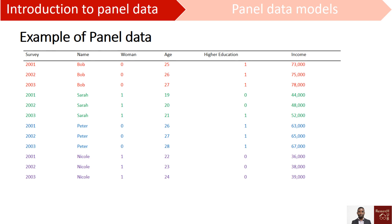Here is an example of a panel data structure. We study four people concerning their gender, age, education, and income, and we collect the data for each individual for three consecutive years. So we take Bob and collect all the information needed in 2001, then go to Sarah and collect the same in 2001, and repeat for each year.